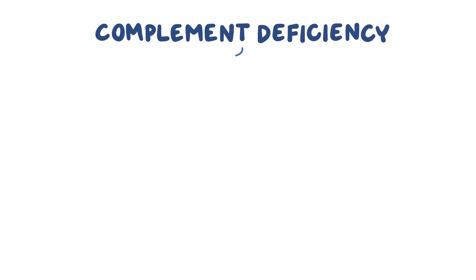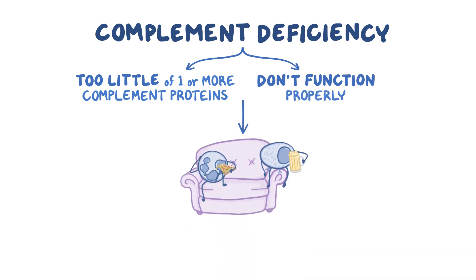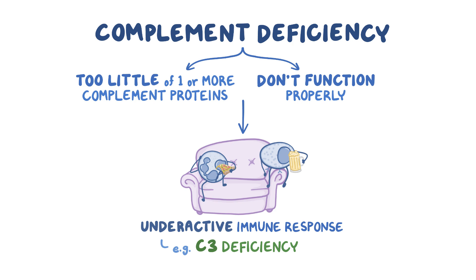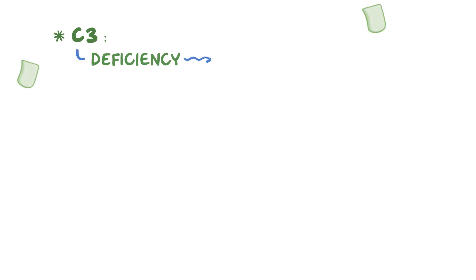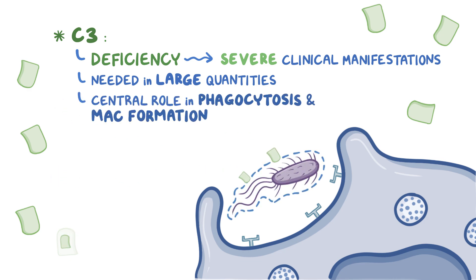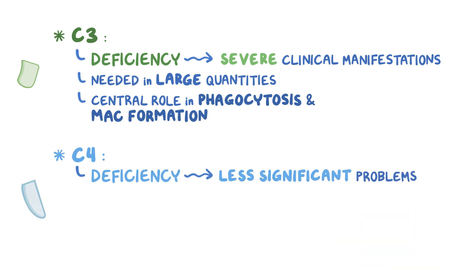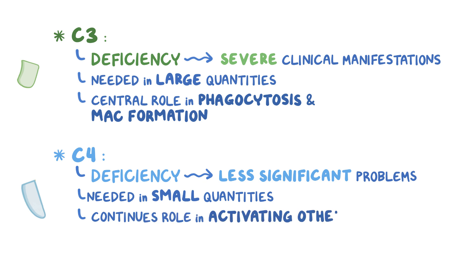In complement deficiency, there's either too little of one or more complement system proteins, or they just don't function properly. This can cause an underactive immune response, like in C3 deficiency, because C3 would normally activate the complement system. A C3 deficiency causes severe clinical manifestations because C3 is needed in large quantities and plays a central role in phagocytosis and the formation of membrane attack complexes. By comparison, a C4 deficiency causes less significant problems because C4 is only needed in small quantities, and even a small amount can continue activating other complement proteins.